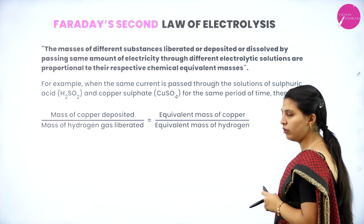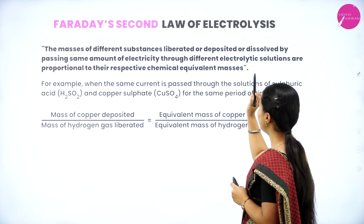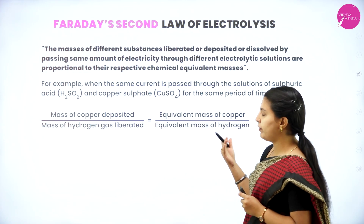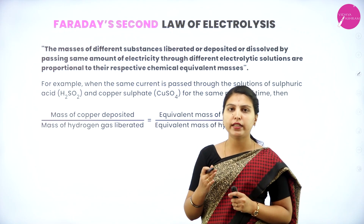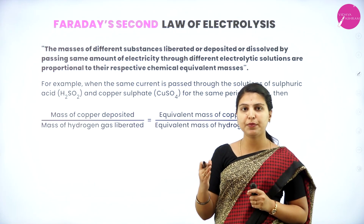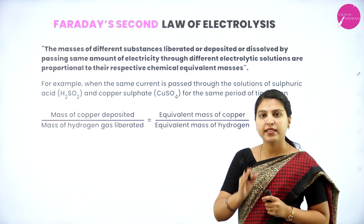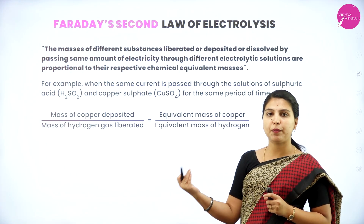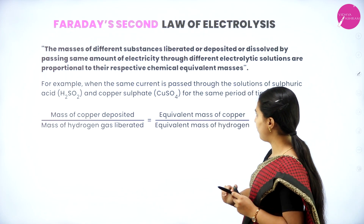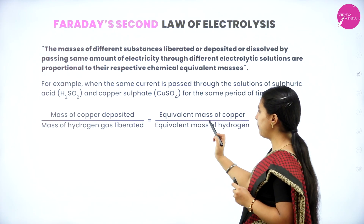Faraday's second law of electrolysis: The masses of different substances liberated, deposited, or dissolved by passing the same amount of electricity through different electrolytic solutions are proportional to their respective chemical equivalent masses. For example, when the same current is passed through solutions of sulfuric acid and copper sulfate for the same period of time, the mass of copper deposited divided by the mass of hydrogen gas liberated equals the equivalent mass of copper divided by the equivalent mass of hydrogen.